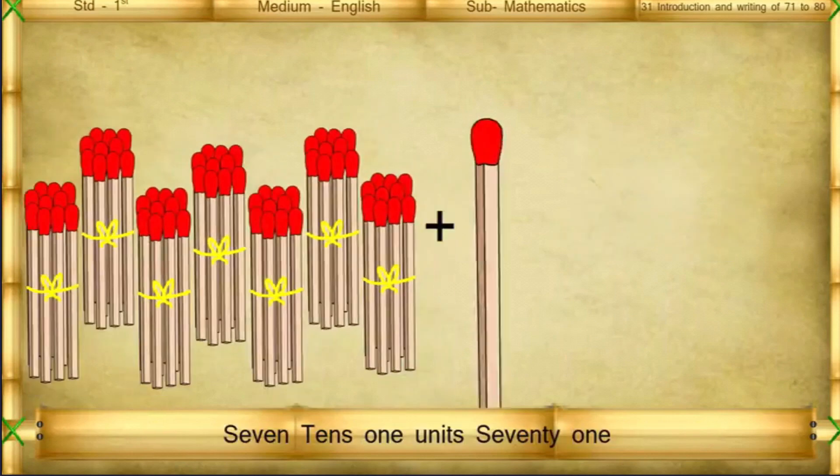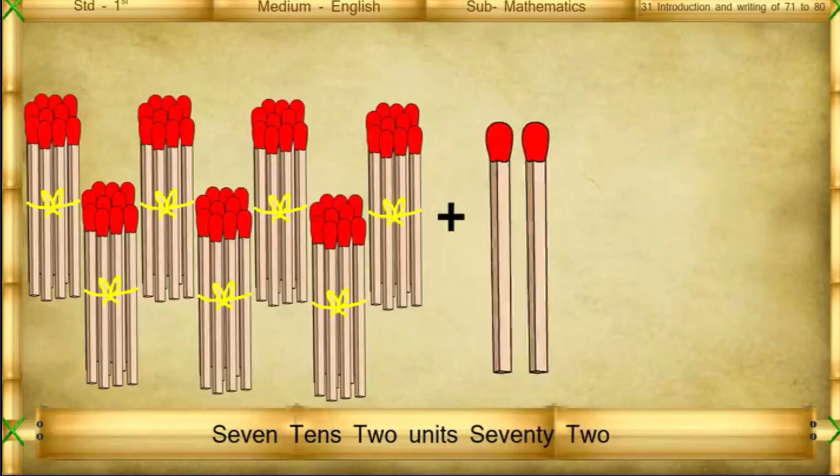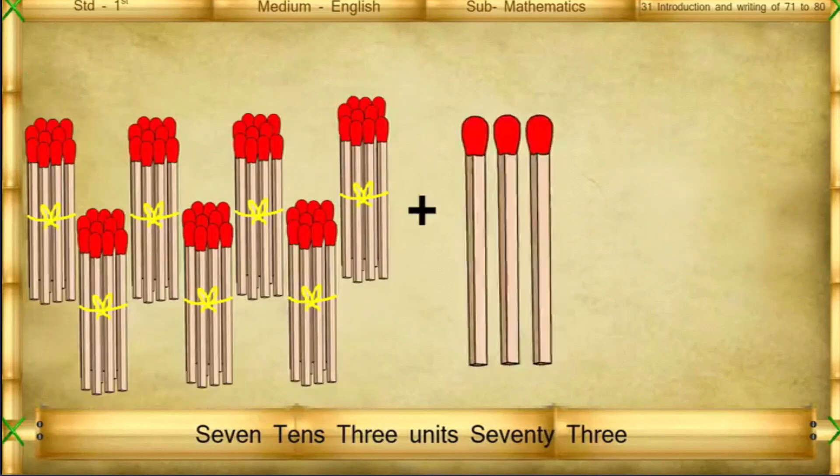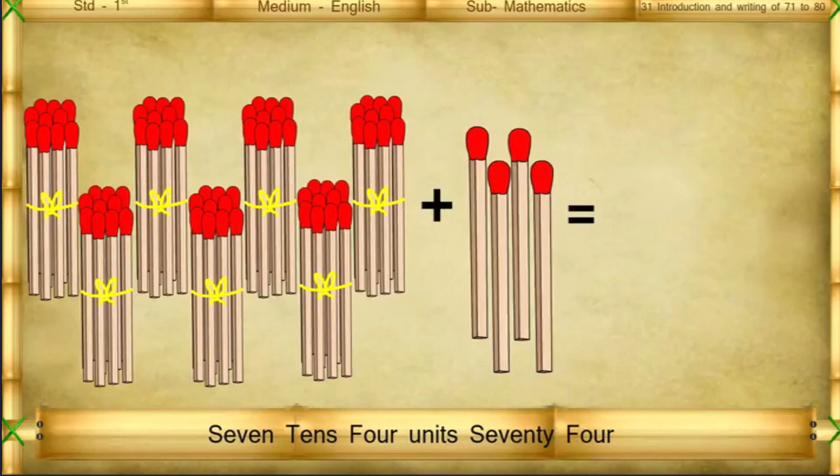7 tens 1 unit: 71. 7 tens 2 units: 72. 7 tens 3 units: 73. 7 tens 4 units: 74.